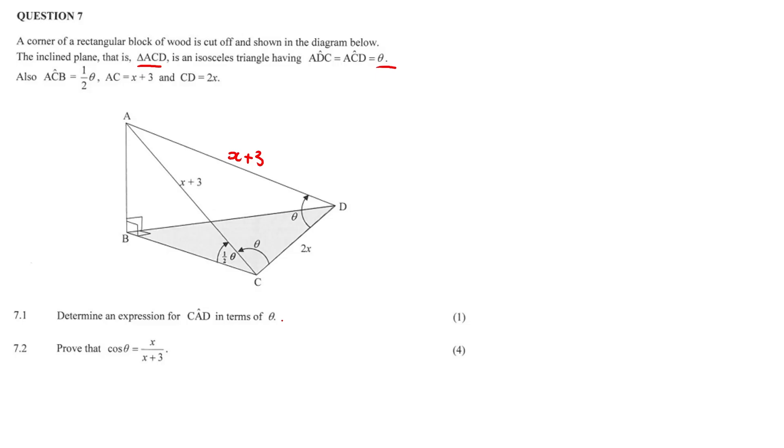So question 7.1: determine an expression for CAD in terms of theta. Well, we know that the internal angles of a triangle sum to 180 degrees. We know that C is equal to theta, we want to calculate A, we know that D is also equal to theta. So A is just going to be 180 minus 2 theta. Very easy way to solve that.